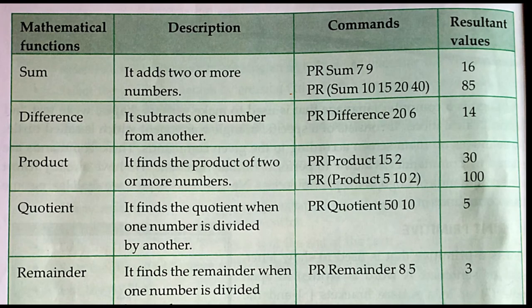If I take the PR command, we can see PR is one type of mathematical function. You can find the sum, difference, product, quotient, and remainder by using the PR command. For example, PR sum 7 9 displays the result as 16 — that is 7 plus 9. PR sum with the bracket containing 10, 15, 20, 40 displays the result as 85.